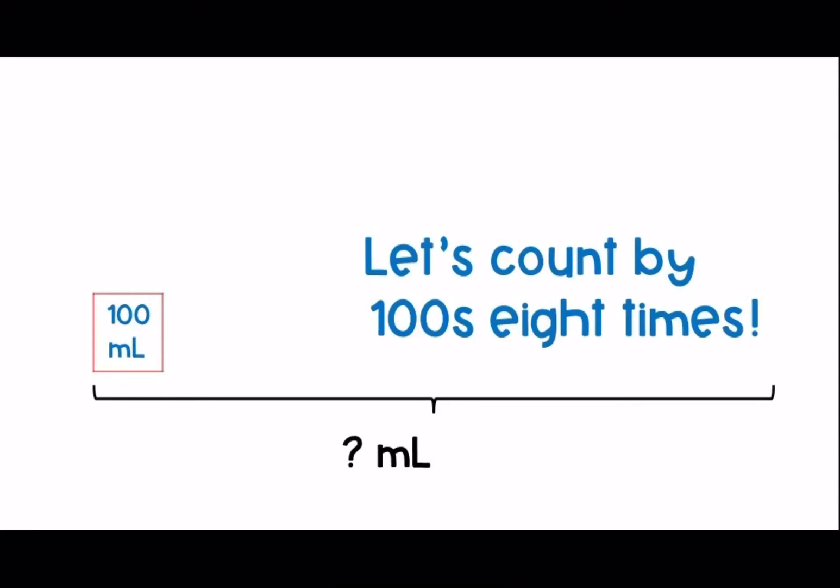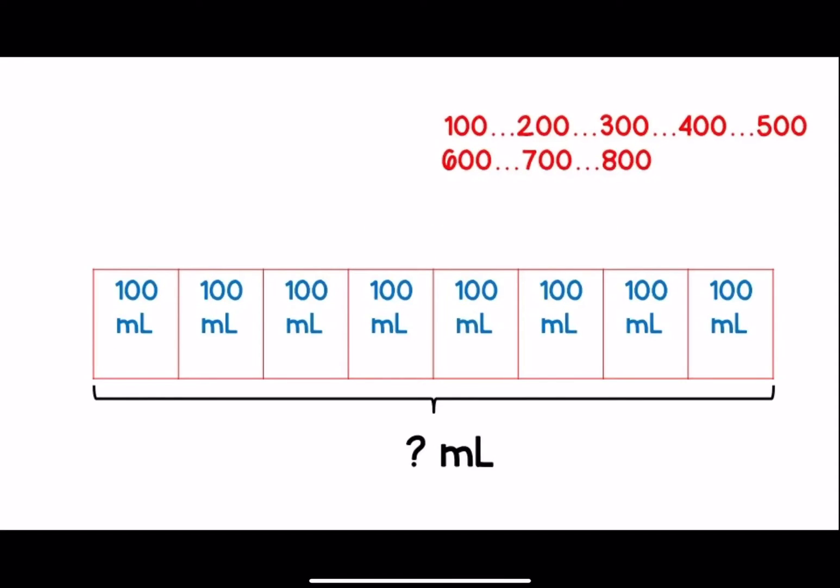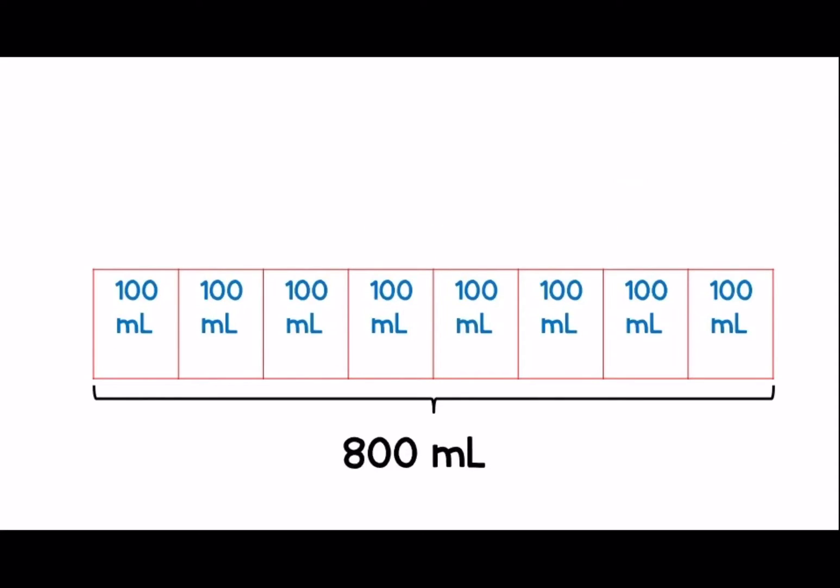Then we can count by 100s 8 times. 100, 200, 300, 400, 500, 600, 700, 800. There are 800 milliliters in all. We can say that 100 times 8 equals 800.